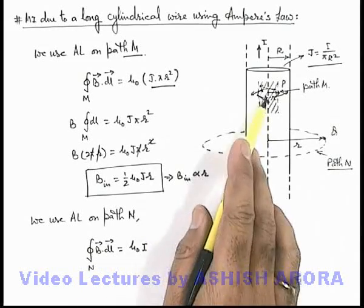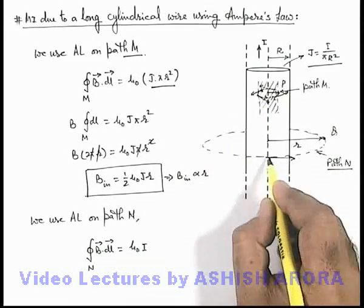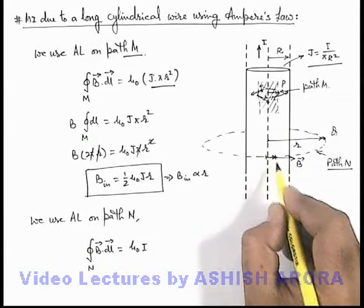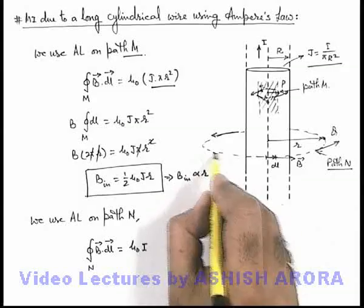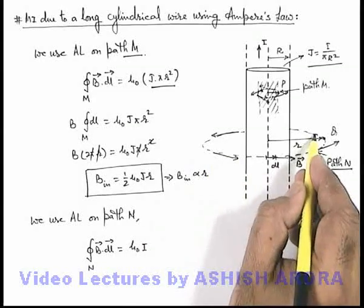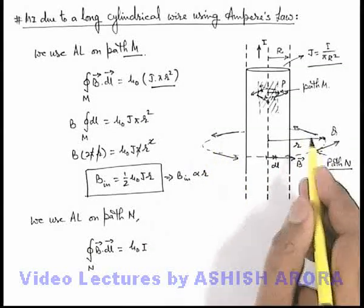And similar to that situation here also magnetic field B vector and dL vector are parallel, and at every point by symmetry we can say magnetic induction is along the tangent of the circle and it is uniform.